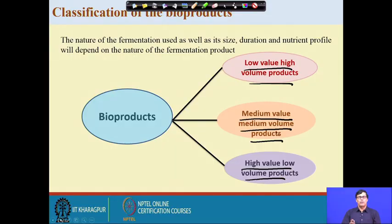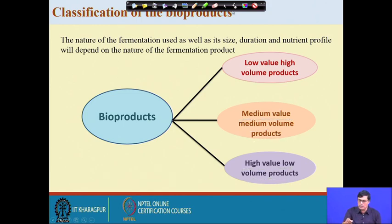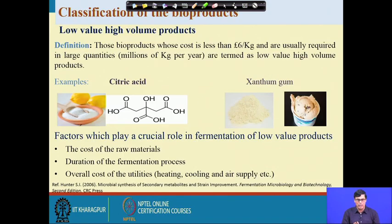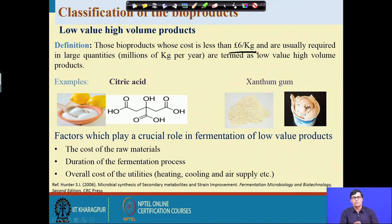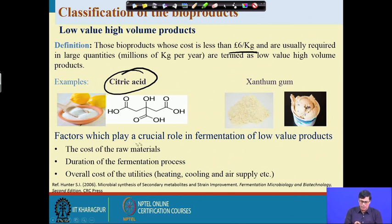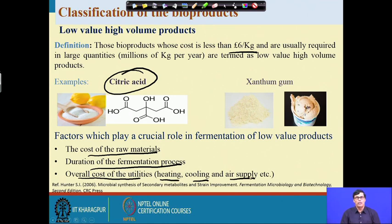As an example, I worked with a biochemical company where we produced four to five tons of succinic acid per day. For low value high volume products, the cost is within six pounds per kg of product — citric acid, which is a tricarboxylic acid largely used in daily life, is a prime example. The factors affecting cost for low value products include raw material cost, duration of the fermentation process, and overall utilities such as heating, cooling, and air supply.